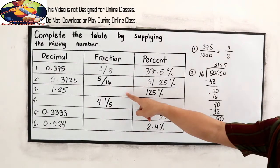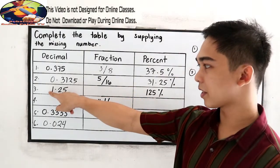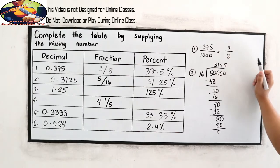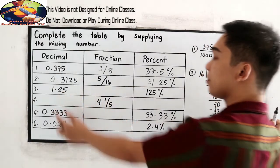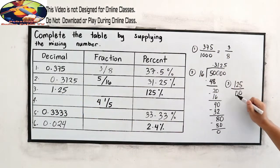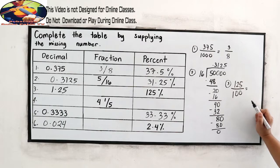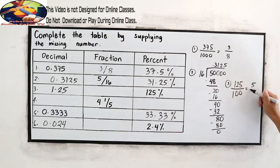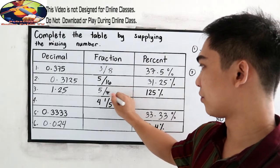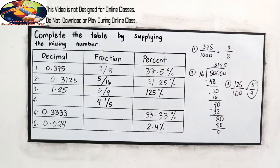Number 3. So copy 125. 2 decimal places. So 2 zeros in our denominator. That will become 100. Now reduce it to lowest term. Divisible by 25. So 5 over 4. That will be the fraction, 5 over 4.